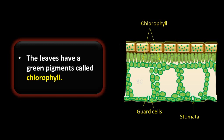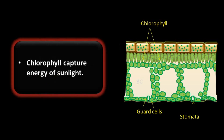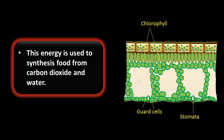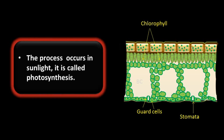The leaves have a green pigment called chlorophyll. Chlorophyll captures energy from sunlight, and this energy is used to synthesize food from carbon dioxide and water. Carbon dioxide and water get converted into food inside the leaf. The process of photosynthesis occurs only in sunlight, which is why it is called photosynthesis — 'photo' means light.